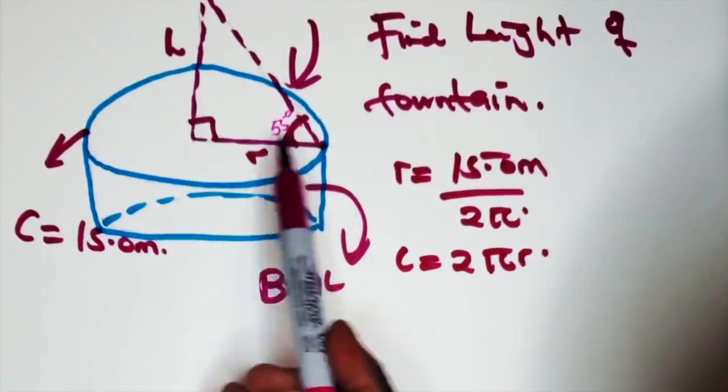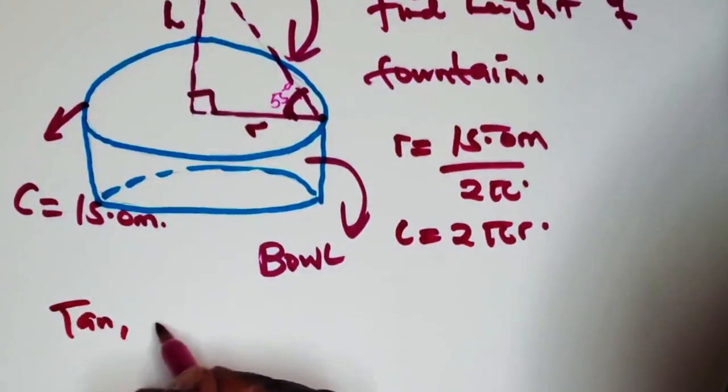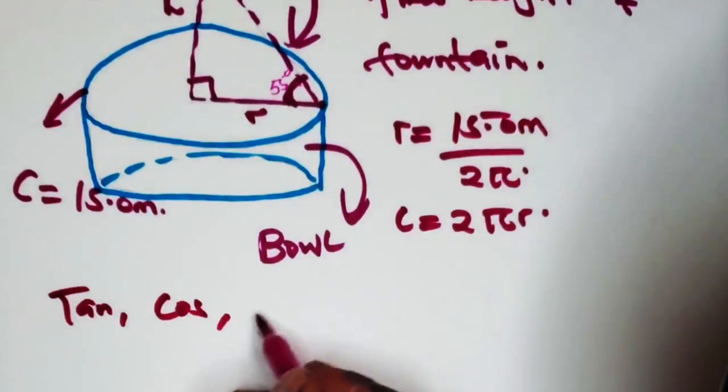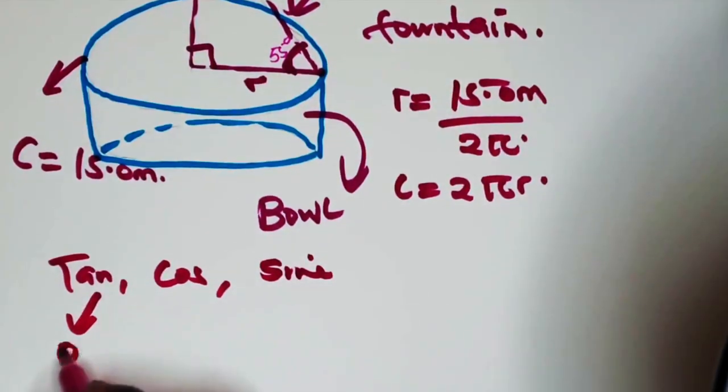Now you have the angle there. And we can do some trigonometry ratios. We have tan, cosine and sine.